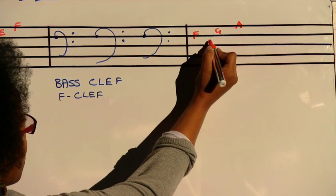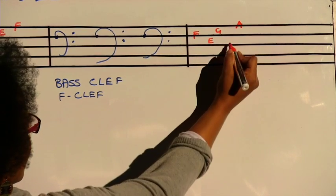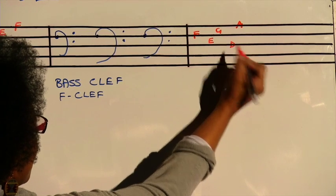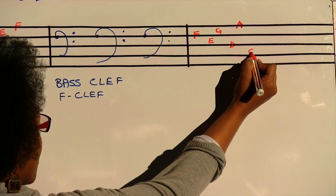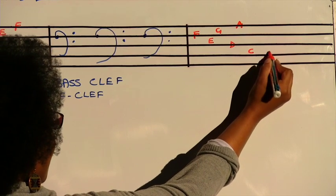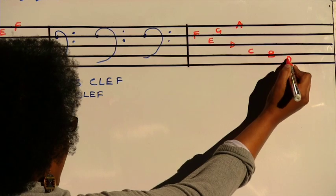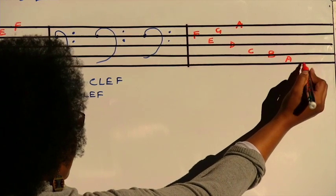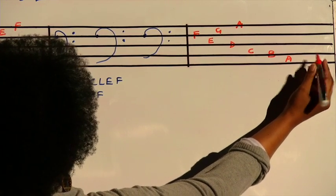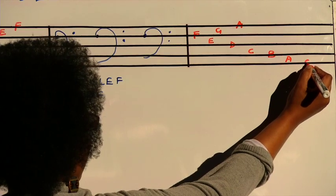The space will be E, the line D, the space C, the line B, the space A. Then the last line of the bass clef is a G.